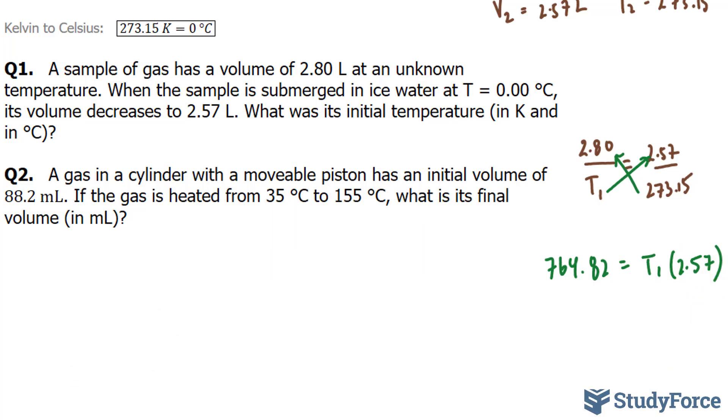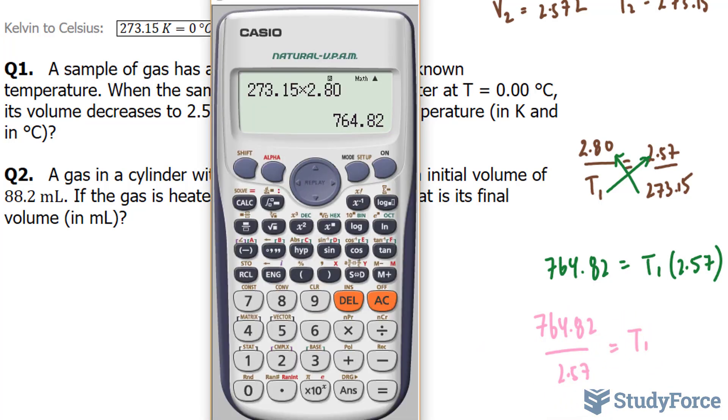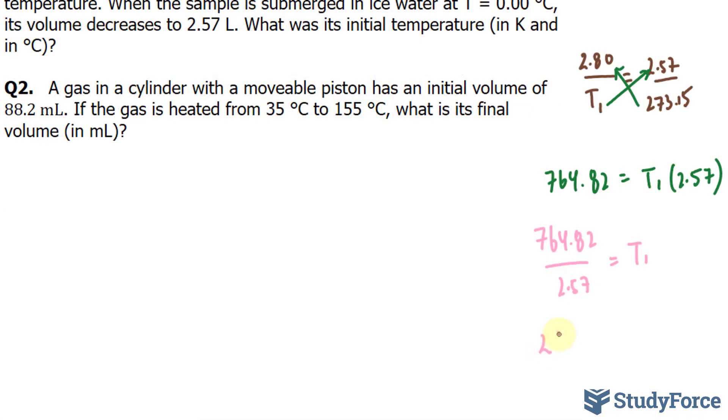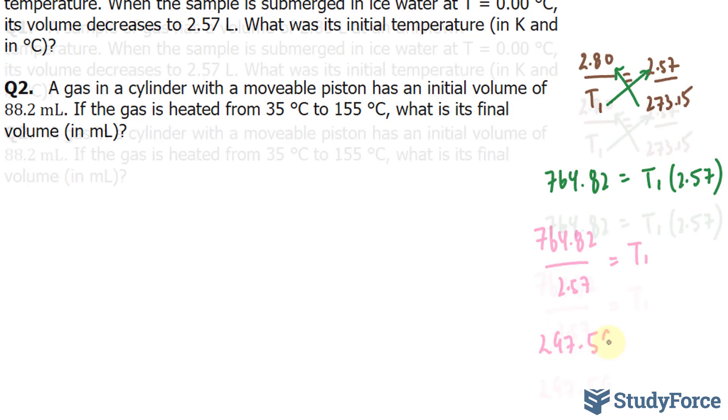Finally, to isolate for T1, we will divide both sides by 2.57. So, 764.82 divided by 2.57 gives us T1. Dividing this by 2.57, we get a final temperature of 297.59.